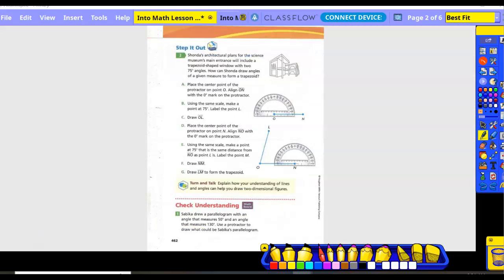Step it out number two. Shonda's architectural plans for the Science Museum's main entrance will include a trapezoid-shaped window with two 75-degree angles. How can Shonda draw angles of a given measure to form a trapezoid? So she placed the center point of the protractor at O, and then she aligned it and did a straight line. That straight line was OI. Now she needs to take her protractor and she needs to go across. So she's going to line this up again.